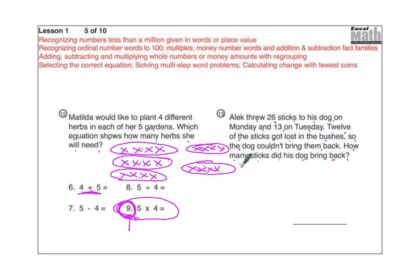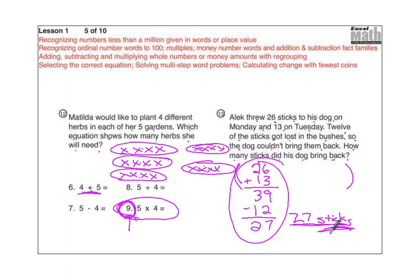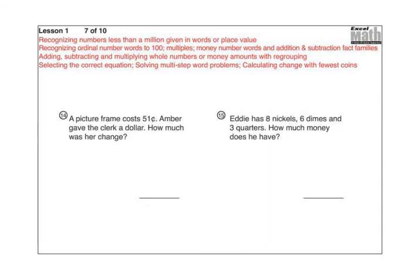I'd like you to pause the video, see if you can do this problem. You need to show your work down here, show the addition, multiplication, subtraction, whatever kind of problem you're doing down here, and then write your answer only on that line right there. Okay, pause the video, give it a shot, then turn it back on. So he threw 26 sticks on Monday and 13 on Tuesday, so that means he threw 39 all together, and 12 of them got lost in the bushes, so you should have subtracted 12 and gotten 27. And you need to put a label with this. Two very important things about word problems. You need to show your work, and you need to have a label or a word that goes with your number answer. You must do that on all word problems for me this year in math.